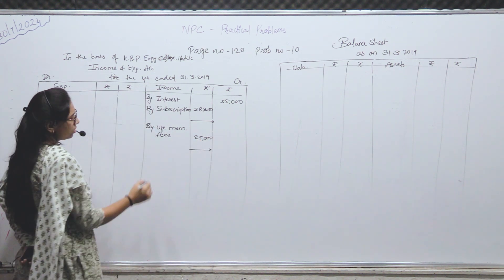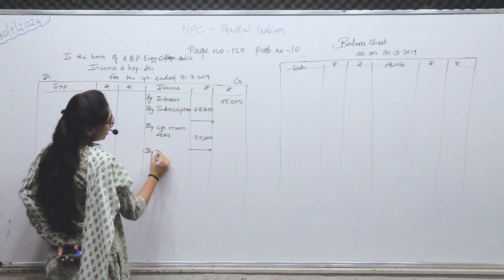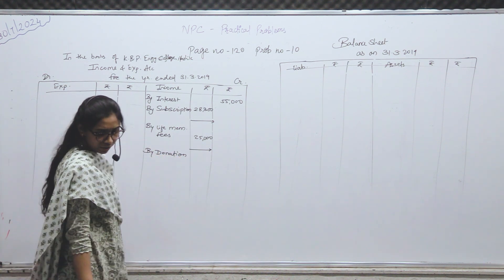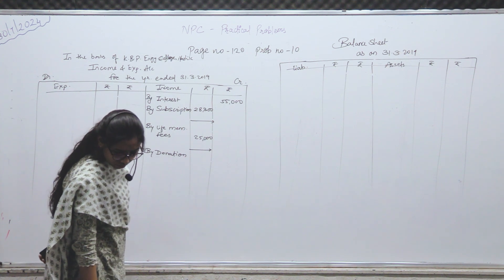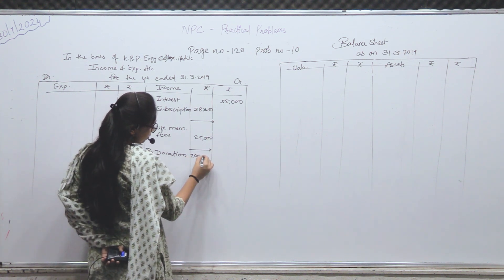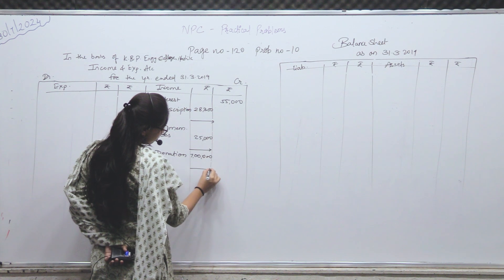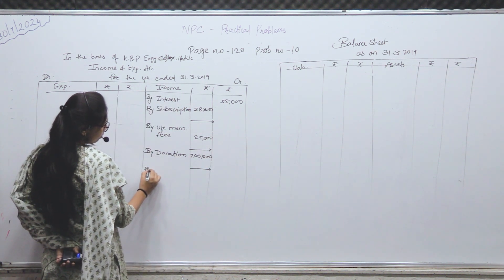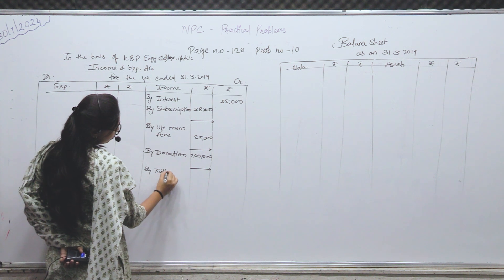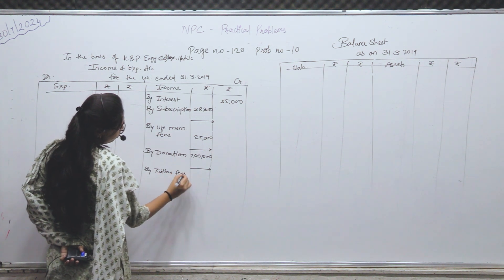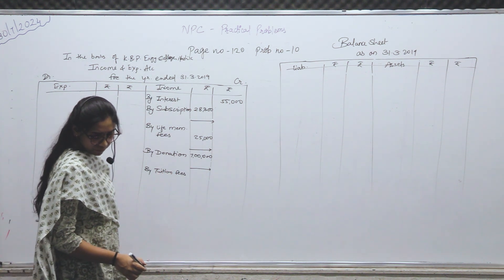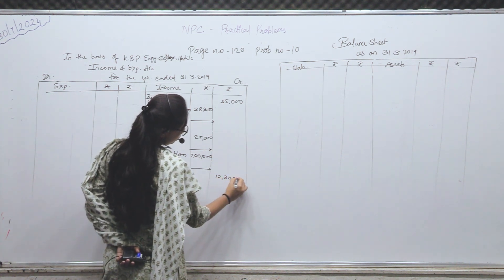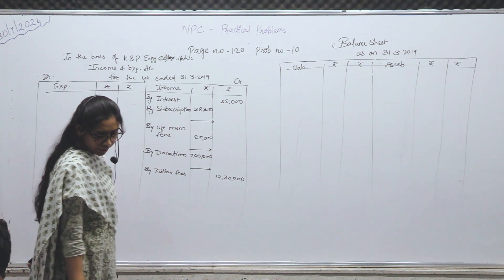Next — donation — adjustment है। By donation — inner में लिखोगे: 7,00,000। Next — tuition fees। By tuition fees — 12,30,000 — outer column में।